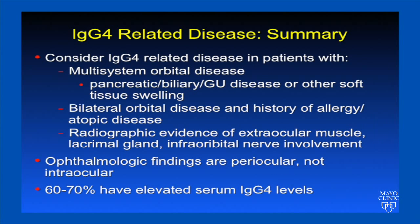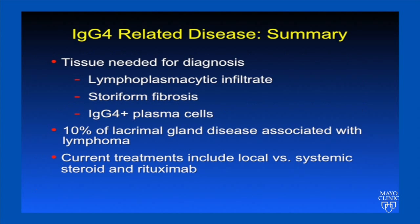To summarize IgG4-related disease of the orbit: consider this diagnosis in patients with multi-system orbital disease, particularly in the context of pancreatic, biliary, or GU disease or other soft tissue swelling; bilateral orbital disease with a history of allergy or atopic disease; and radiographic evidence of extraocular muscle, lacrimal gland, and infraorbital nerve involvement. The ophthalmologic findings are periocular, not intraocular. The majority of patients will have elevated serum IgG4 levels, but a significant minority will have normal levels. Tissue is needed to make the diagnosis, with specific findings including lymphoplasmacytic infiltrate, storiform fibrosis, and IgG4-positive plasma cells. 10% of lacrimal gland disease is associated with lymphoma. Current treatments include local or systemic steroid and rituximab.